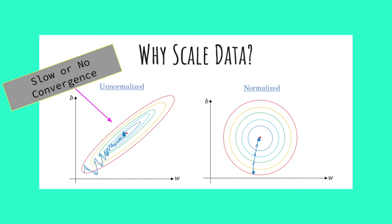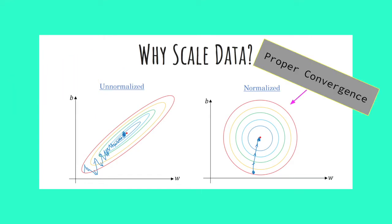With unnormalized features, that gradient plane can end up being very skinny and ovular, which will lead us to taking indirect steps to the global minima. On the other hand, the normalized data can much more easily take steps in the correct direction for quick convergence.